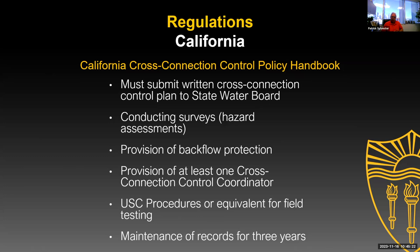First of all, you must submit a written cross-connection control plan to the state water board — they're requiring every water agency in the state to submit a cross-connection control plan to the state. You also have to conduct surveys or hazard assessments, which is a requirement that is there now, and you have to actually do a survey.